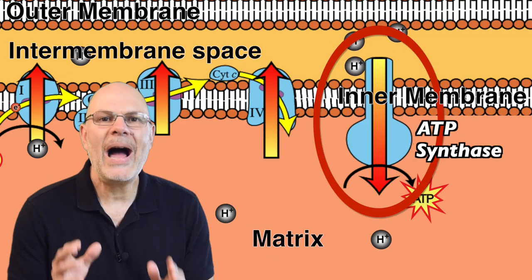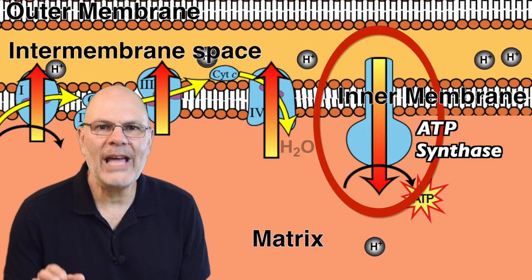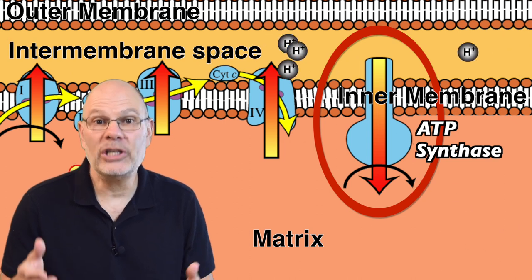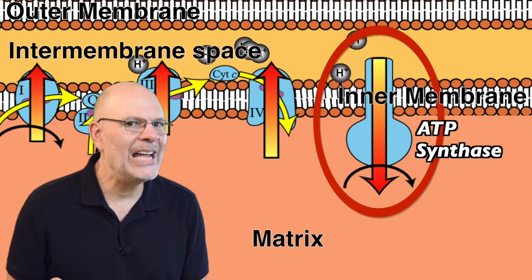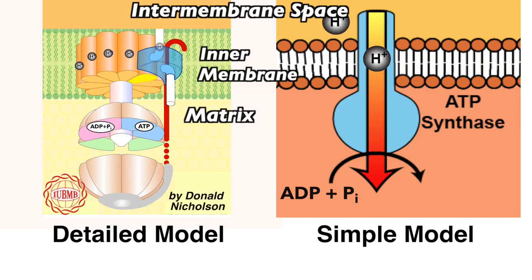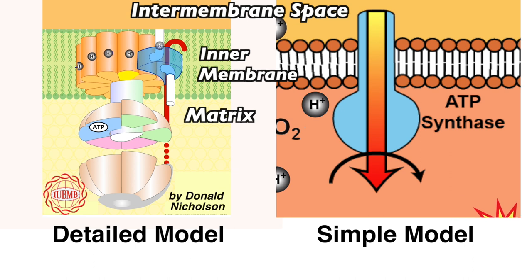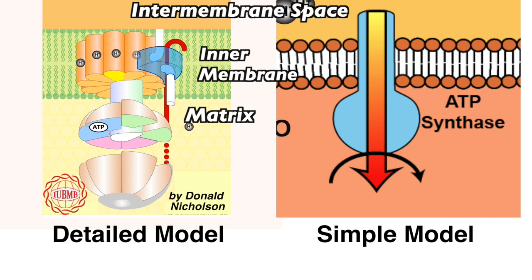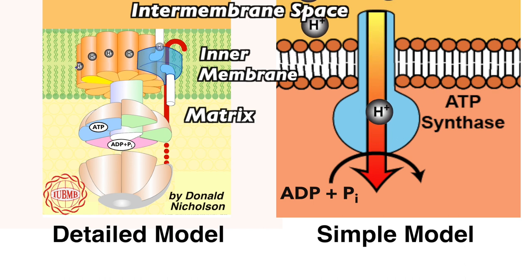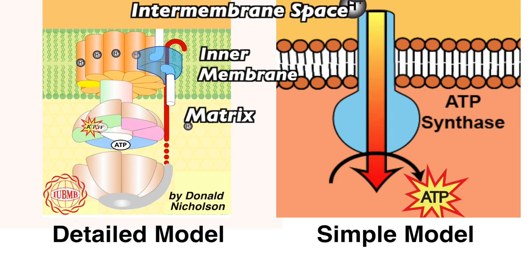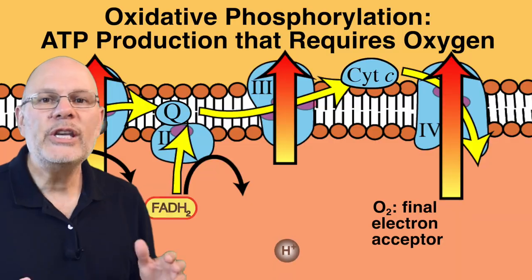In the mitochondrial inner membrane, there's a transmembrane channel called ATP synthase. It's a channel for protons and it's an enzyme. When protons diffuse from the intermembrane space back to the matrix, ATP synthase uses the kinetic energy of these diffusing protons to convert ADP and phosphate into ATP.